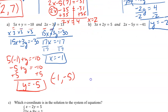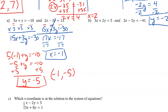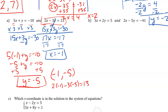Now I'll do a quick check. 2 times negative 1, minus 3 times negative 5 — let's see if that equals 13. That's my second equation I'm using as my check. So negative 2 plus positive 15 equals 13. Yes, negative 2 plus 15 equals 13.